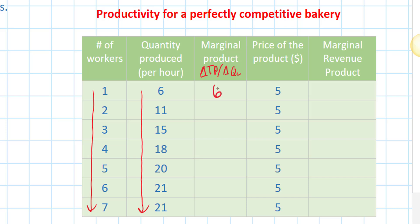All we need to do is see how much total output changes for each additional worker hired. The first worker contributes six loaves of bread. As employment goes up to 2, output increases to 11 for a marginal product of 5. Output then goes up to 15, giving a marginal product of 4 for the third worker. The fourth worker contributes three loaves, the fifth two, the sixth one loaf, and the seventh worker no additional loaves.